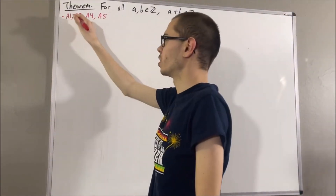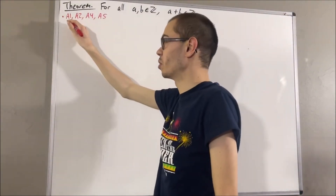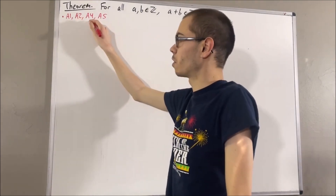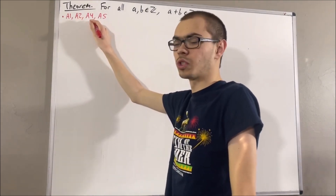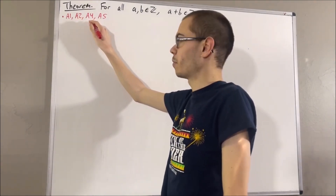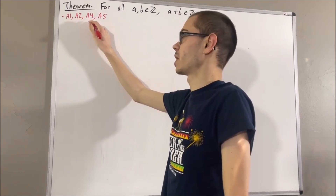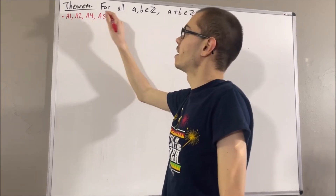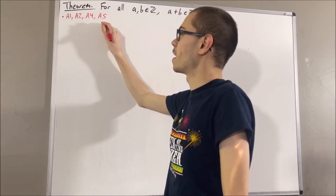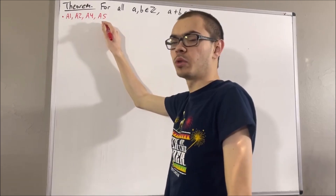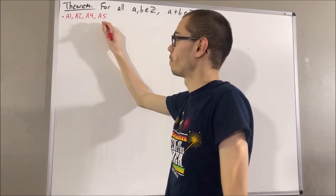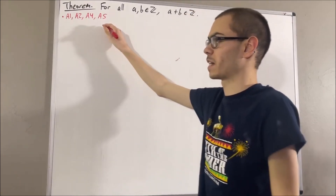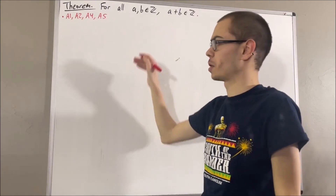Axioms 1 and 2 are just the commutative and associative laws. Axiom 4 tells us about the real number 0, and we have: for all real numbers x, x plus 0 is equal to x. Axiom 5 tells us every real number has a negative, and we have: for all real numbers x, x plus the negative of x is equal to 0.